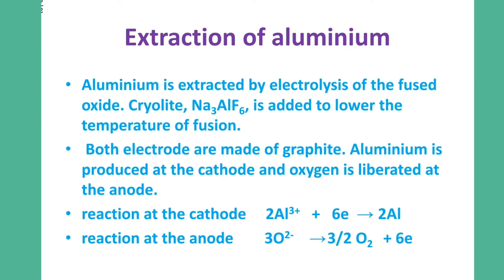In this lesson, we will see the extraction of aluminum. Aluminum is extracted by electrolysis of the fused oxide — fused aluminum oxide. The fused aluminum oxide has a high melting point.